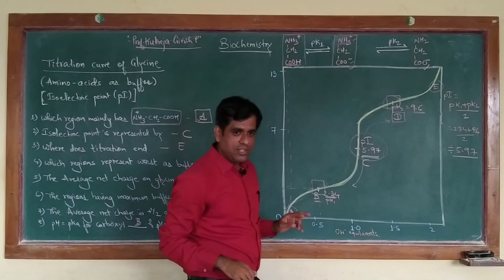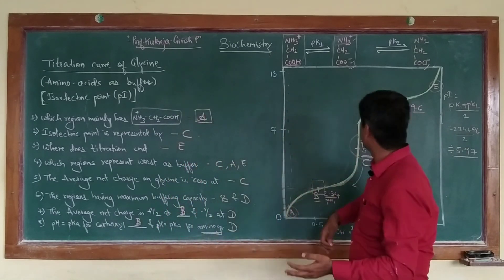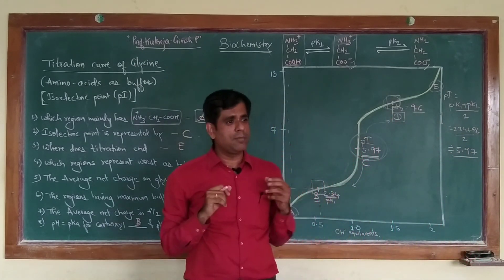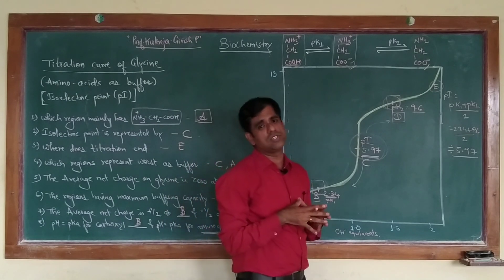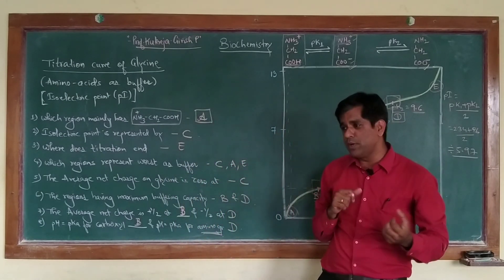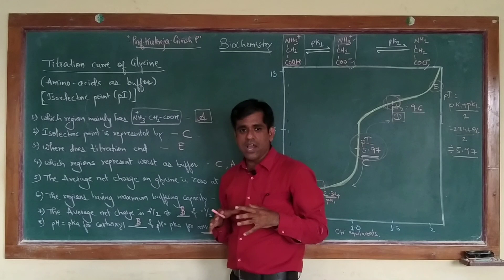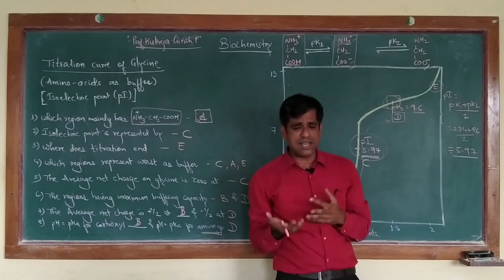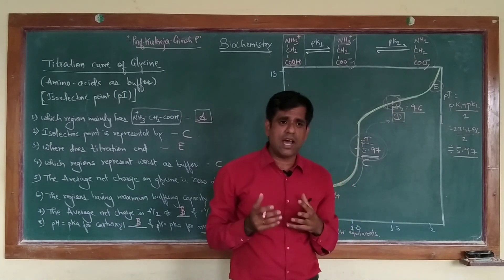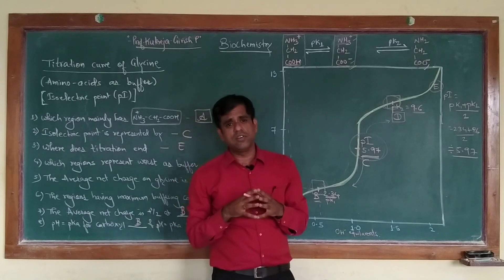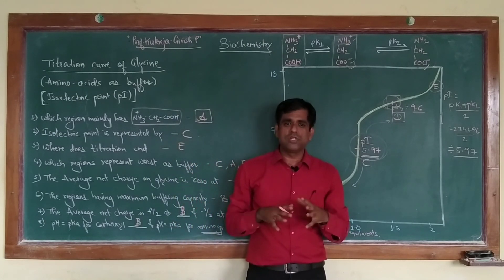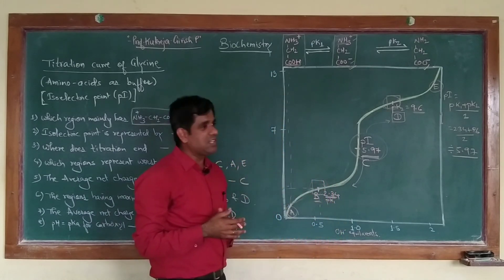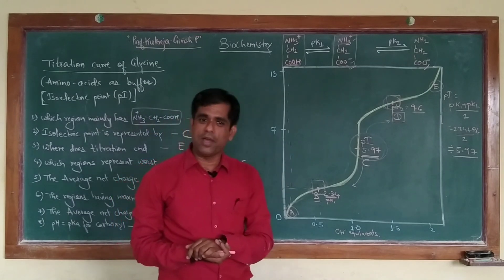Since we are able to answer all the questions, we have completed the titration curve of glycine. Glycine being the simplest amino acid, there was no interference from the R group, which was only hydrogen, so there were no ionizable groups present — the only ionization seen was that of the inherent amino group and the carboxyl group. There are acidic and basic amino acids which have other R groups; their titration curves are different and the calculations of PI are also different. We will cover that in our next upcoming video, so stay tuned for more in microbiology and biochemistry. Thank you.